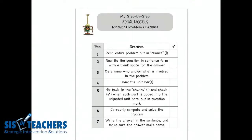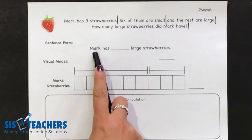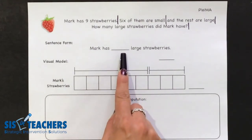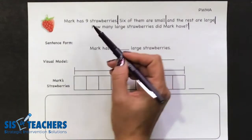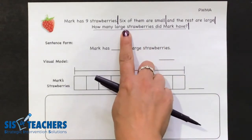So we go back to our checklist and simply put a check that we read the entire problem and put the chunks in. The second part of the problem solving process for visual models is to rewrite the question in sentence form. We go ahead and put this in sentence form because it helps students understand what the question is asking. So on our story problem mat for first grade we've already scaffolded this sentence: 'Mark has ___ strawberries.' Students can underline the actual question in the story to help them understand how that's developed.